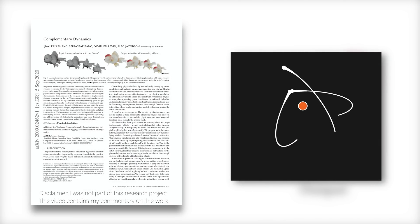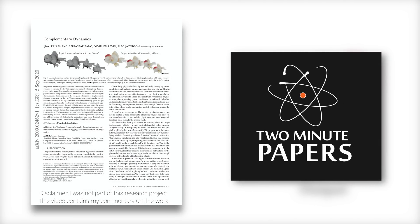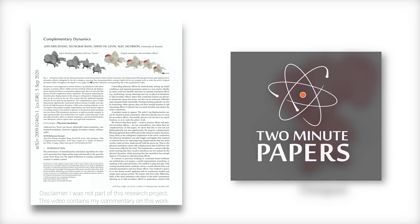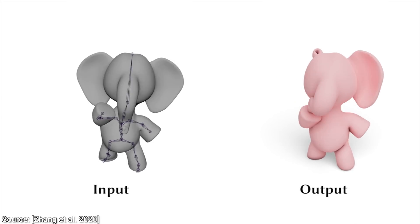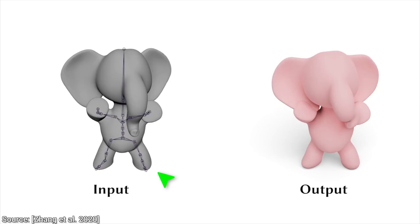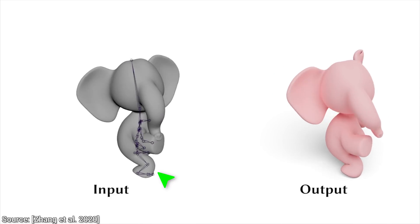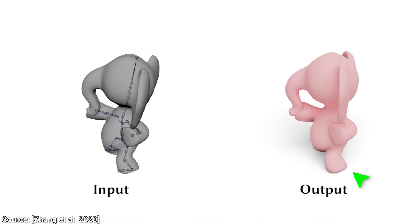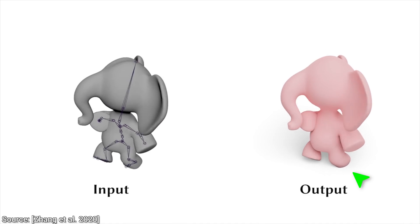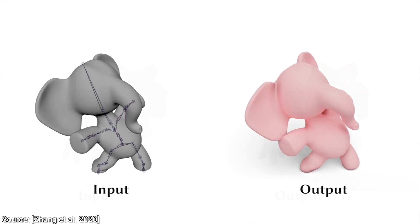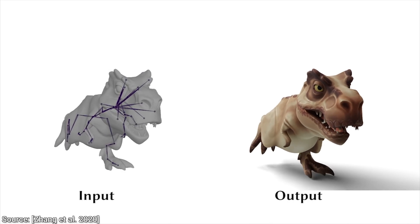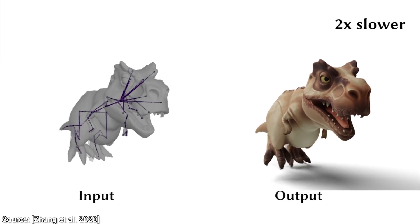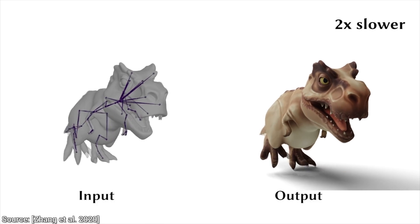Dear Fellow Scholars, this is Two Minute Papers with Dr. Károly Zsolnai-Fehér. I hope you like wiggles and jiggles, because today we are going to see a lot of them. You see, this technique promises to imbue a rigged animation with elastoplastic secondary effects. Now, if you tell this to a computer graphics researcher, they will be extremely happy to hear that this is finally possible, but what does this really mean?